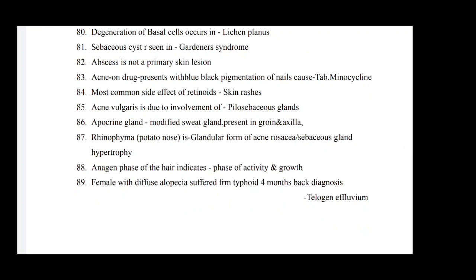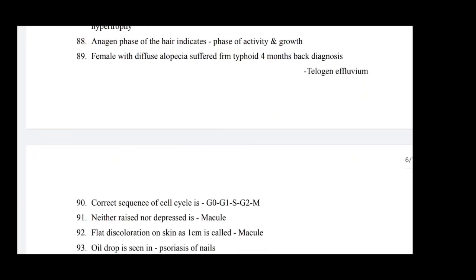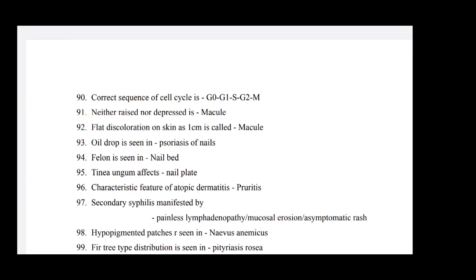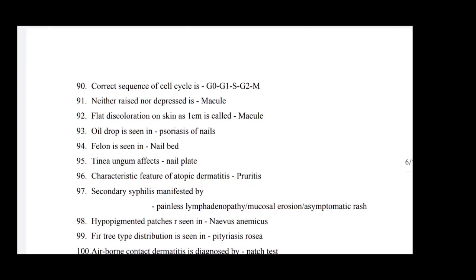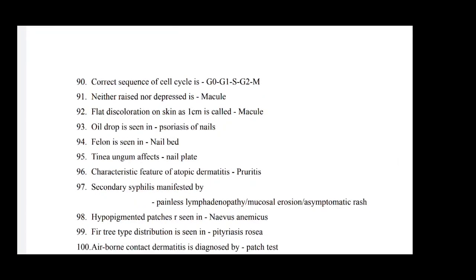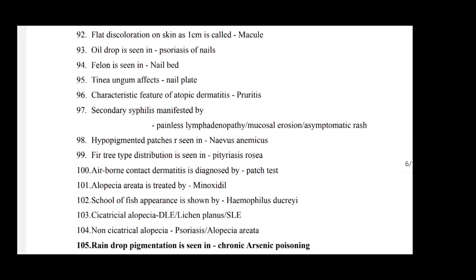Anagen phase of hair indicates phase of activity and growth. Female with diffuse alopecia after suffering from typhoid a month back: diagnosis is telogen effluvium. Correct sequence of cell cycle is G0, G1, S, G2, and M. Macula is a flat discoloration on the skin less than one centimeter. Oil drop sign is seen in psoriasis of nail. Onycholysis is seen in nail bed. Tinea unguium affects nail plate. Characteristic feature of atopic dermatitis is pruritus.